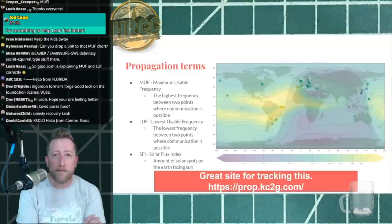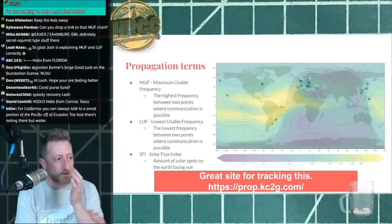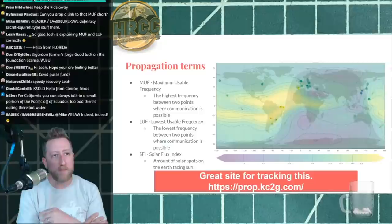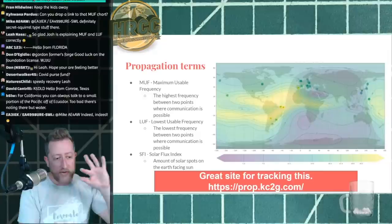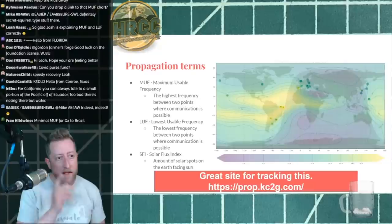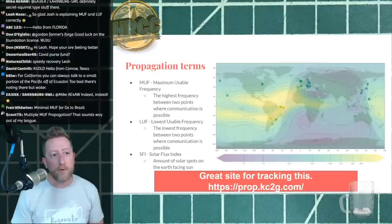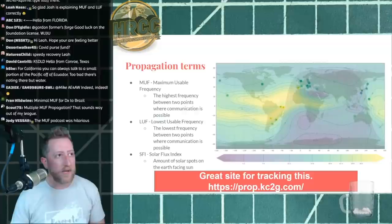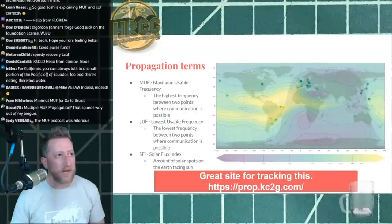The lowest usable frequency is the lowest frequency that's possible for making a QSO between two points. The SFI is the solar flux index — it's the amount of sunspots on the earth-facing sun. As we move around the sun, the sides we see change, and sunspots are calculated to give us the solar flux index value. This map is available at prop.kc2g.com — a really good page that you can leave up on your screen.